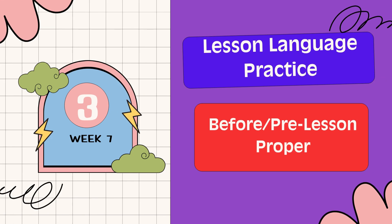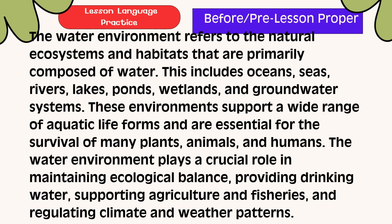Lesson Language Practice. The water environment refers to the natural ecosystem and habitats that are primarily composed of water. This includes oceans, seas, rivers, lakes, ponds, wetlands, and groundwater systems.